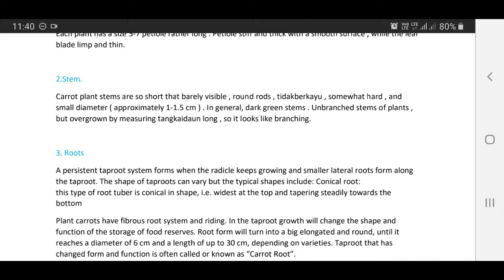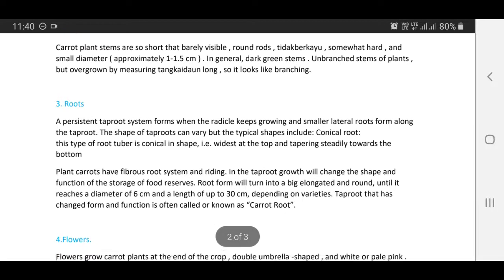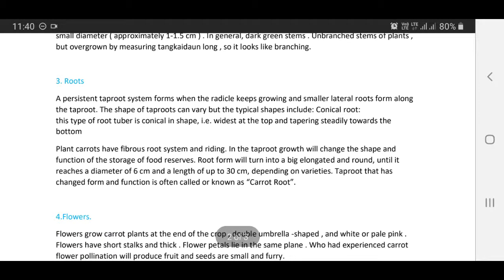The taproot growth will change the shape and function of the storage of food reserves. Root form will turn into a big, elongated and round form until it reaches a diameter of 6 cm and a length of up to 30 cm depending on varieties. Taproot that has changed form and function is often called or known as carrot root.